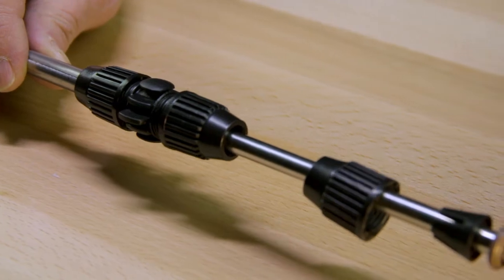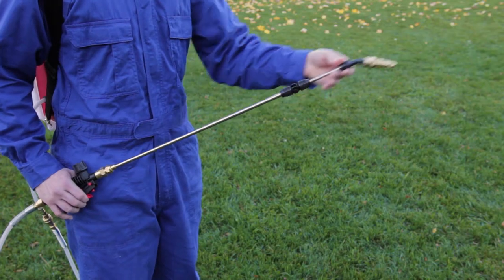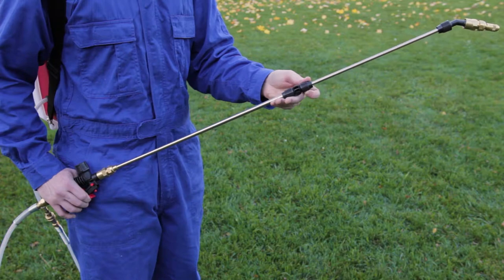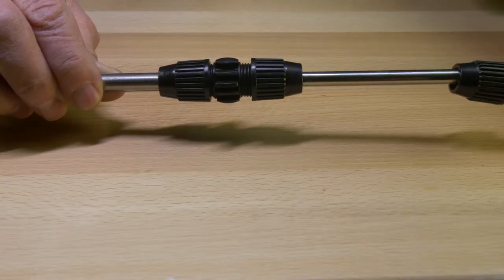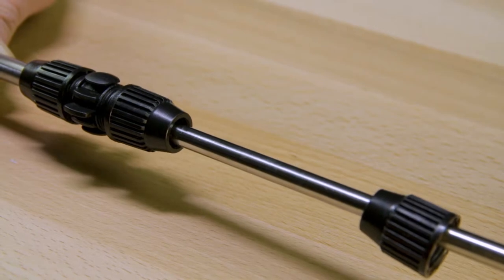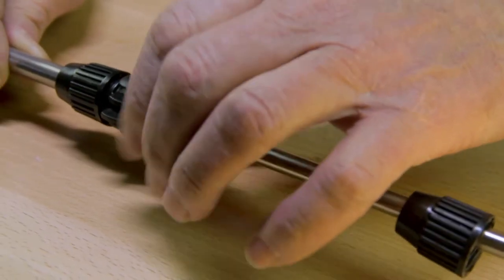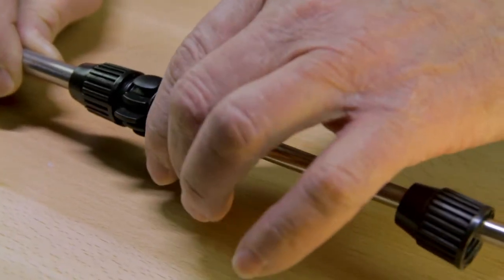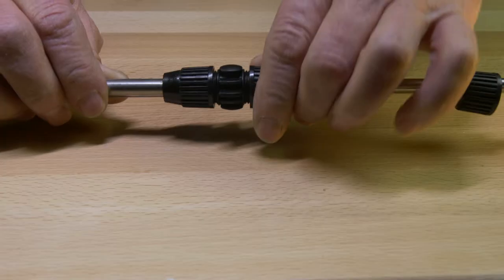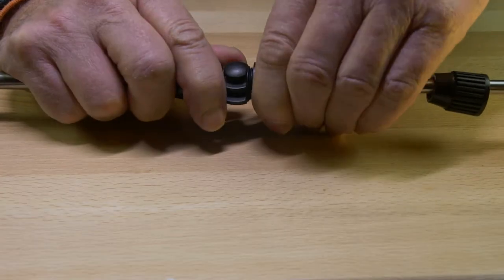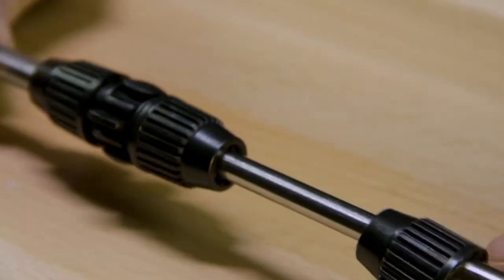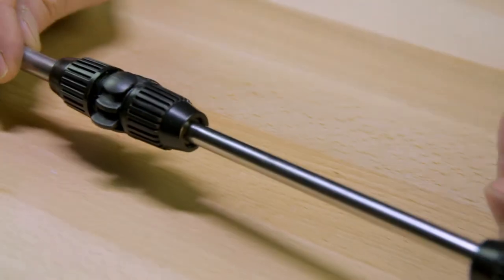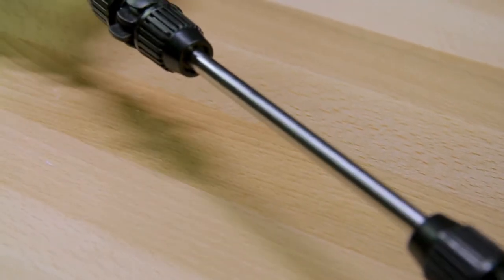This is the one that allows you to pull the wand in and out so you can get the required length. What you have to remember is whenever you finalize the length that you desire, you've got to go back and retighten this. There's a seal in here that locks it off, so you need to snug it up nice and tight. That locks the wand in place and gets you ready for your next job.